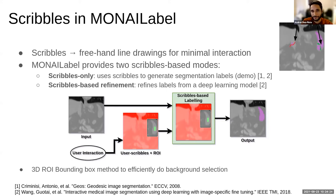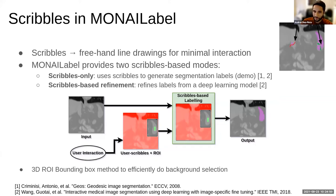Another nice MONAILabel feature is scribble-based segmentation. Scribbles are free-hand line drawings — lines drawn with viewer tools. Based on those lines, you can segment an image very quickly. Those segmentations can then be used to train the model in the background. There are different scribble segmentation algorithms; the demo will show the simple one used for cold start.